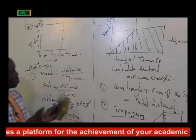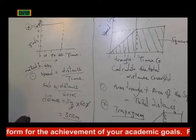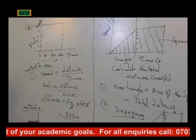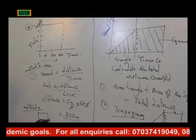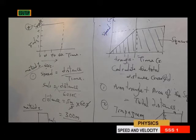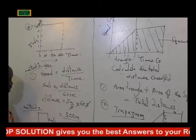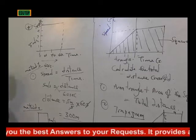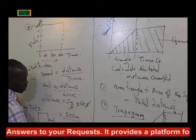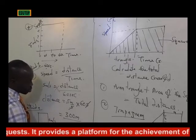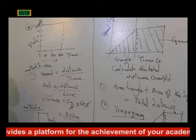But we want to do it using Method 2 — the area of the shape. This shape is a rectangle. This side is 5 meters per second and this side is 60 seconds. Area of a rectangle is length times breadth. It is a rectangle because the two parameters are not equal. So the area is 5 times 60, which gives you 300 meters.